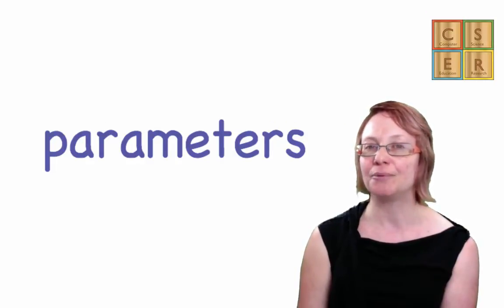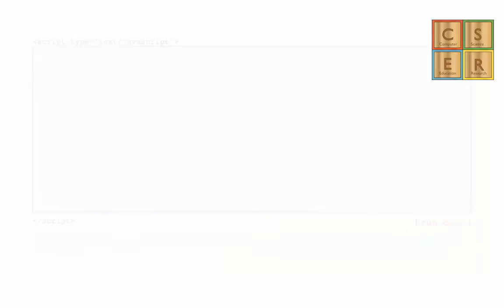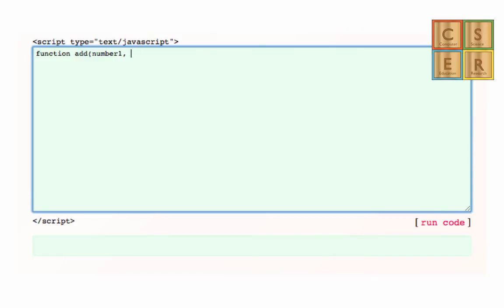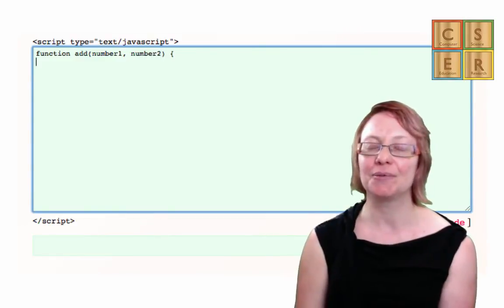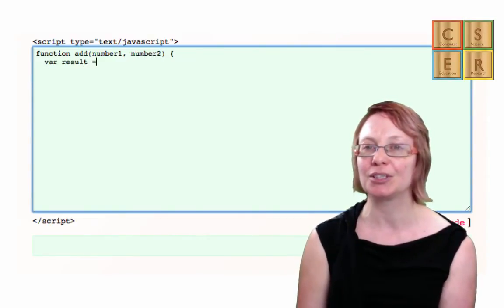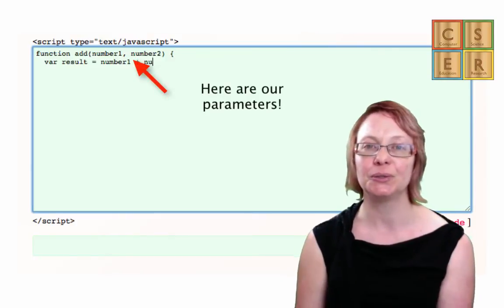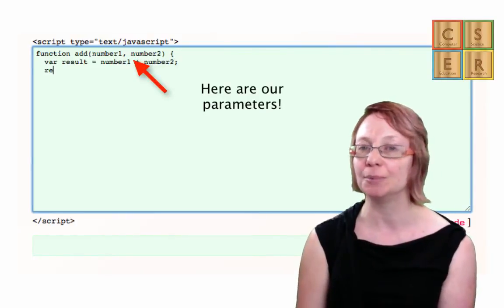We would rewrite our function to be a more general function, using parameters like so. This tells us that we have a function that needs two pieces of information, number 1 and number 2, to be provided in order for it to complete its task.